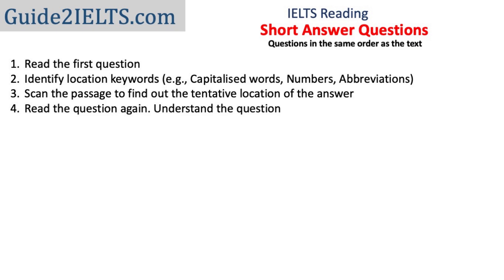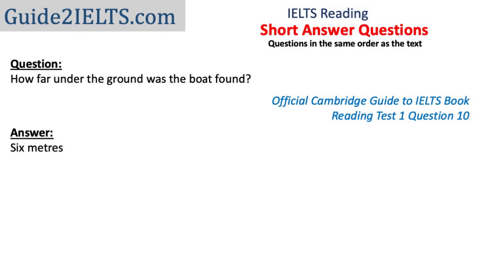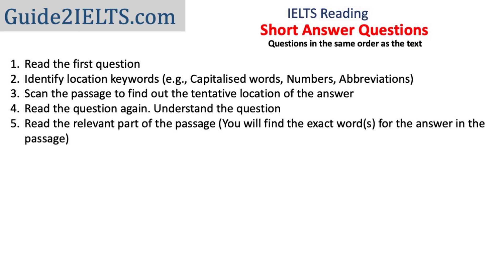In short answer questions, once you understand the question, you usually have some idea of what you're looking for. For example, if the question says 'how far?' you know you're looking for a distance. Now read the relevant part of the passage carefully — you may need to read two to three sentences. Remember, you will find the exact word or words for the answer in the passage. Finally, try to find synonyms for as many words in the question as possible to confirm your answer.